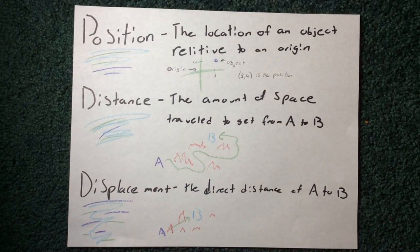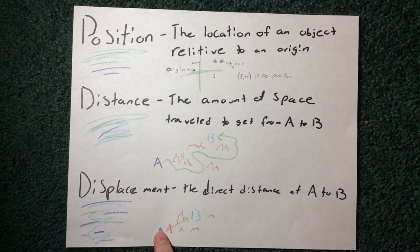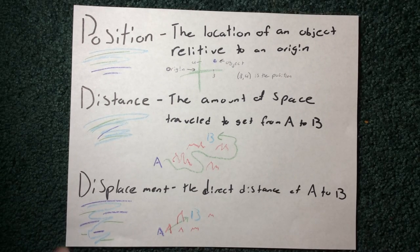And then displacement is the direct distance of A to B. So if you could walk through the fire, you could just go straight through all the way to B.